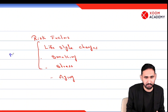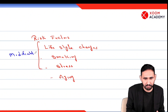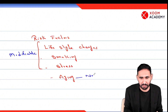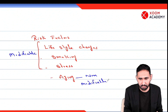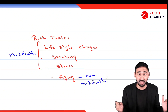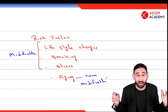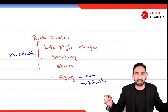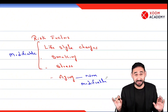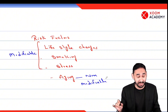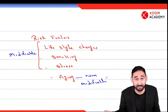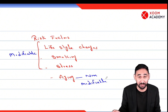Modifiable means we can change them. Non-modifiable risk factors we cannot change. Suppose four factors are contributing to disease — if we minimize three factors, one factor can still cause the disease but slowly, and the disease will be less severe. So these factors contribute towards each other.